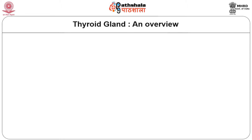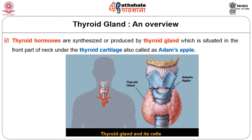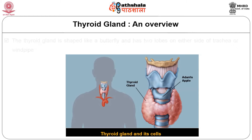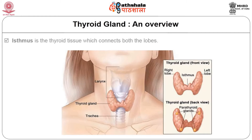Having studied what the thyroid gland is and the hormones it secretes, let us learn where it is located in the body. Thyroid hormones are synthesized by the thyroid gland, which is situated in the front part of the neck, under the thyroid cartilage, also called Adam's apple. The thyroid gland is shaped like a butterfly and has two lobes on either side of the trachea or windpipe. The isthmus is the thyroid tissue which connects both lobes.